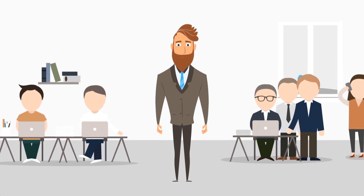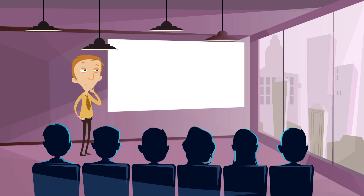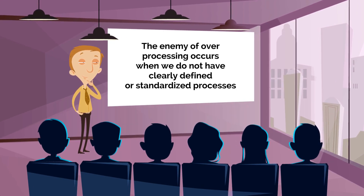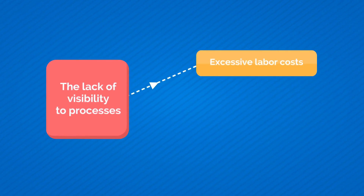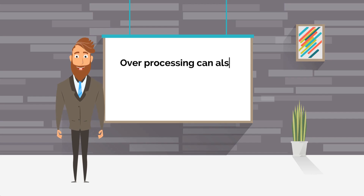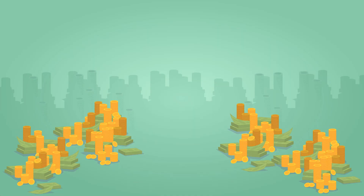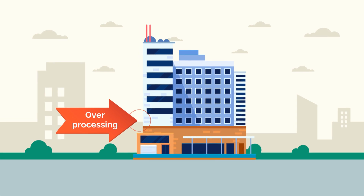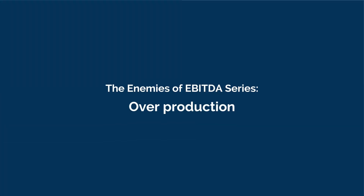Performing extra steps in a process is costly. Even though the argument might be that those extra steps only take a few minutes, add those minutes up over a lifetime and you just lost your retirement. The enemy of over-processing occurs when we do not have clearly defined or standardized processes. The lack of visibility to processes creates excessive labor cost and missed opportunities to innovate. Over-processing can also occur when we start adding features to retain customers without any data to know if the customer actually values those additional features. Left unattended, these costs can cut deeply into your profitability.